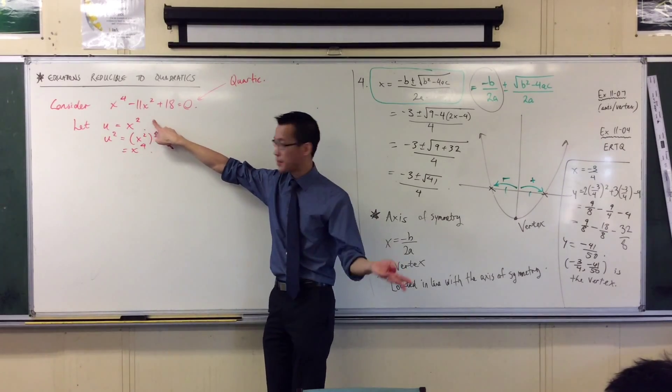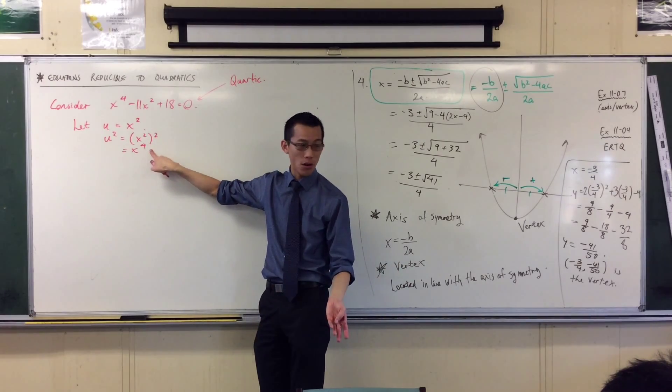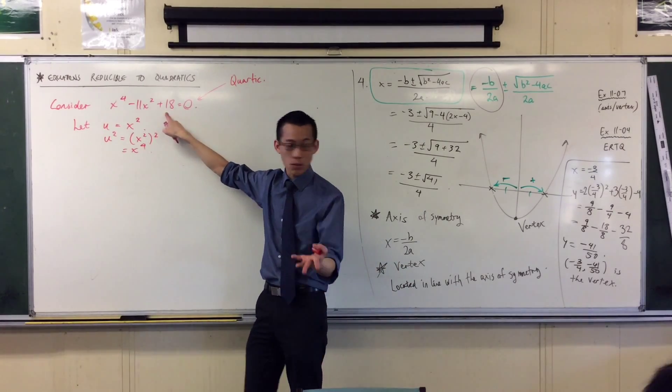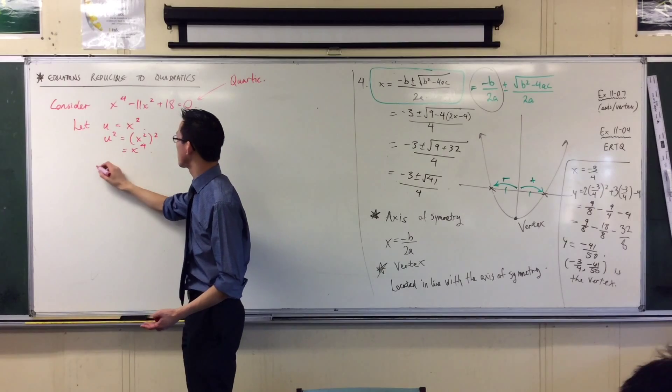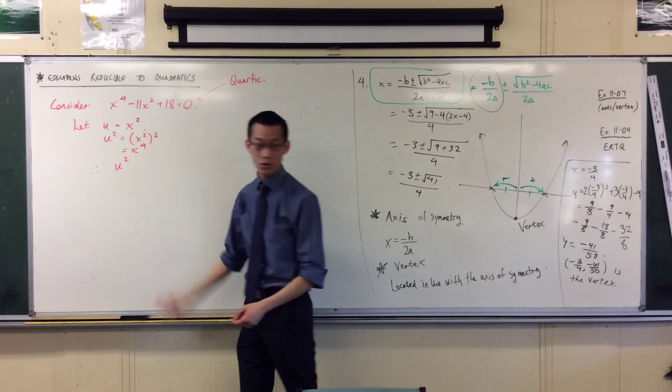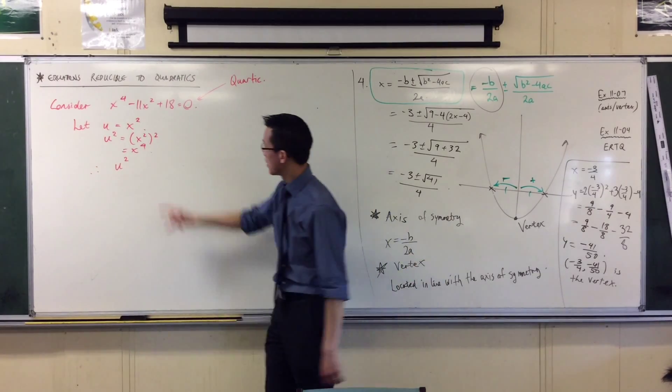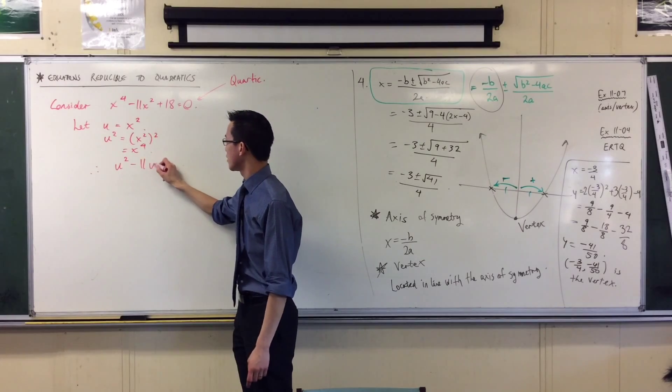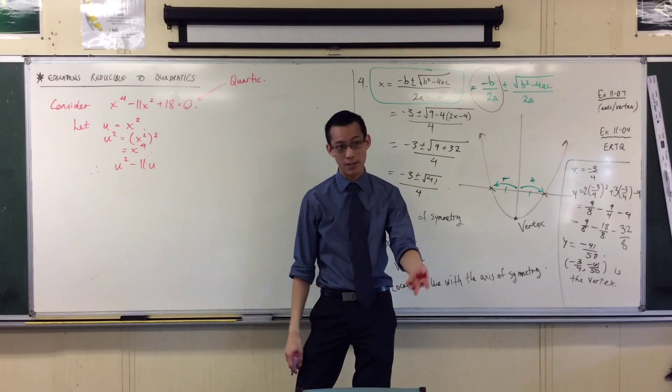Watch. Here's my substitution: I'll say that's just u squared. In here I've got 11u—that's what I defined from the beginning—plus 18.